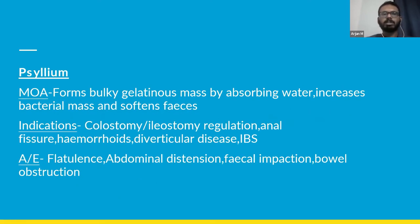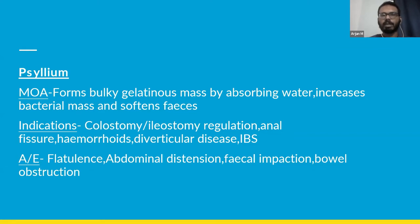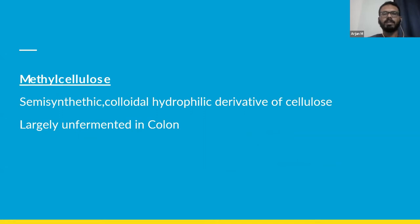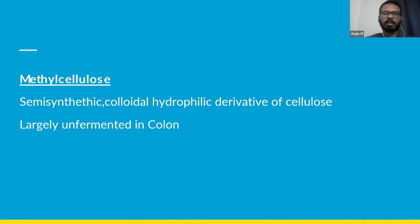Psyllium is also a bulk laxative. Its mechanism of action is that it forms a bulky gelatinous mass by absorbing water, increases bacterial mass, and softens fecal material. Psyllium is indicated in colostomy and ileostomy regulation, anal fissure, hemorrhoids, diverticular disease, and IBS. Major adverse effects include flatulence, abdominal distension, fecal impaction, and bowel obstruction. Methylcellulose is another bulk laxative — a semi-synthetic colloidal hydrophilic derivative of cellulose that is largely unfermented. An important advantage of bulk laxatives is that they can be used to regularize bowel consistency in colostomy patients who may present with liquid stools.